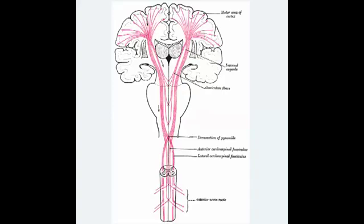To describe the Lateral Corticospinal Tract Pathway, we first look at this picture. In this picture there is a lot going on, but this is a descending pathway. There are neurons going from the motor area of the cortex all the way down to the spinal cord, and from the spinal cord it becomes the lower motor neurons, which attach to the muscle at the neuromuscular junction.